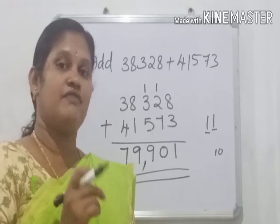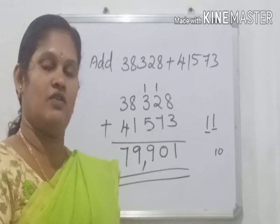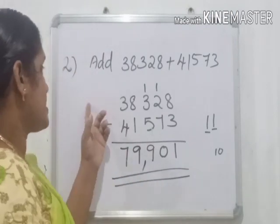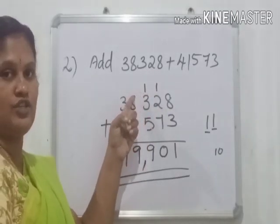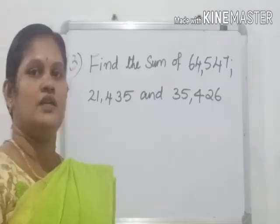In the first example, there was no carryover. That type of addition is called addition without regrouping. But in this case, here is carryover. So this type of addition is called addition with regrouping.